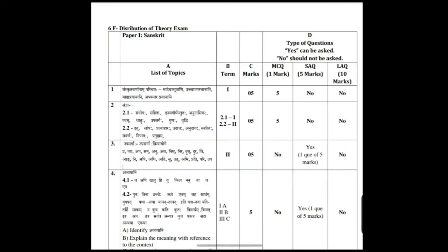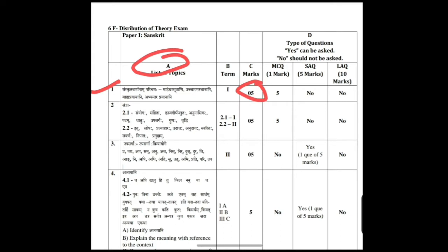Let's discuss the distribution of marks for Paper 1 of Sanskrit. The first column is a list of topics. The first topic is Sanskrit Varnanaam Parjaya, which is for Term 1. It carries 5 marks, and from this only 5 MCQs will be there. There are no 5 mark questions and no 10 mark questions.